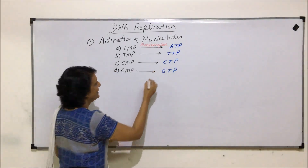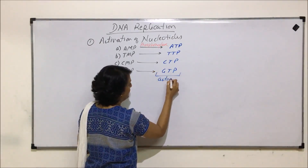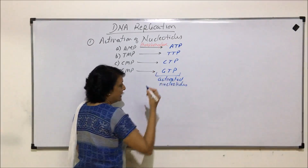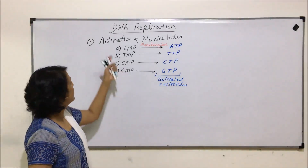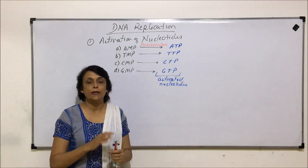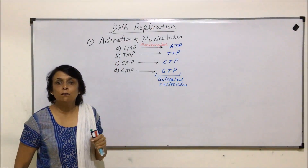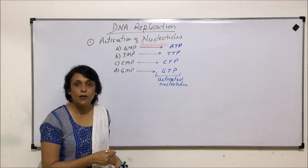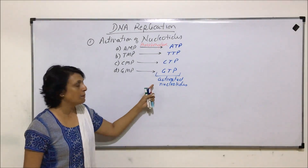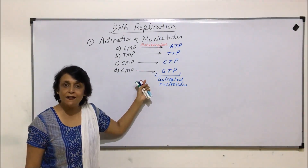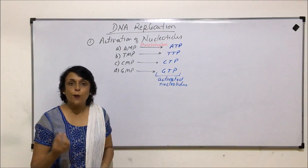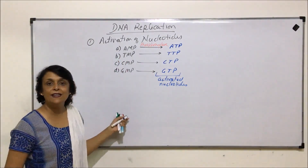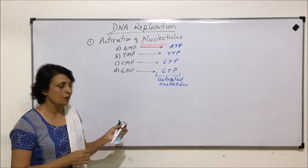Phosphorylase converts all these monophosphates into triphosphates — ATP, TTP, CTP, and GTP — which are the activated nucleotides. Though we number these steps one, two, and so on, that doesn't mean they occur sequentially. Things are happening simultaneously: while nucleotides are being activated, opening up of the DNA helix is also taking place.